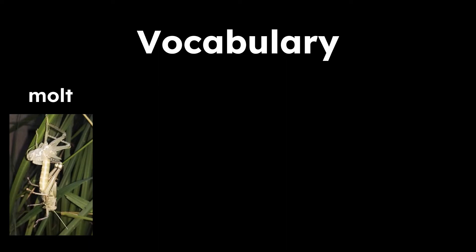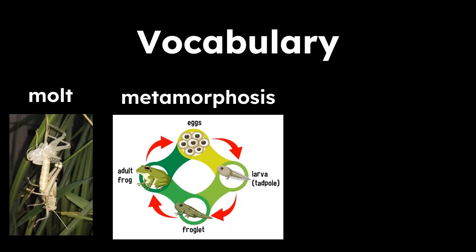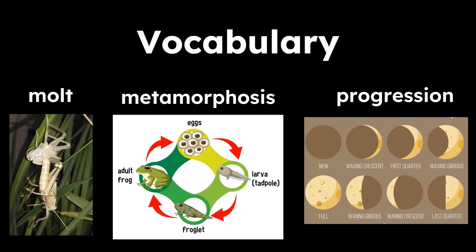Let's take a look at some vocabulary words in our Read Aloud today. The first word is molt — to shed old feathers, hair, skin, or shells, making way for new growth. The next word is metamorphosis — the process of change, taking place in two or more distinct stages in the life of an insect. And the last word is progression — a continuous and connected series of actions or events.